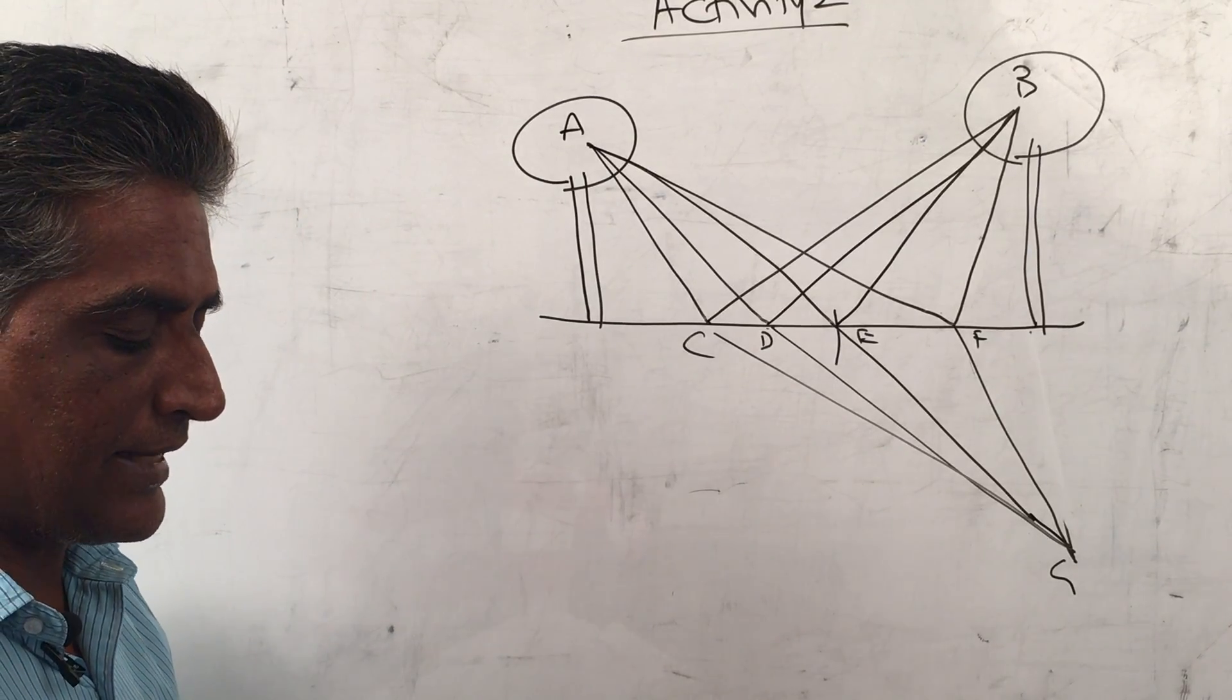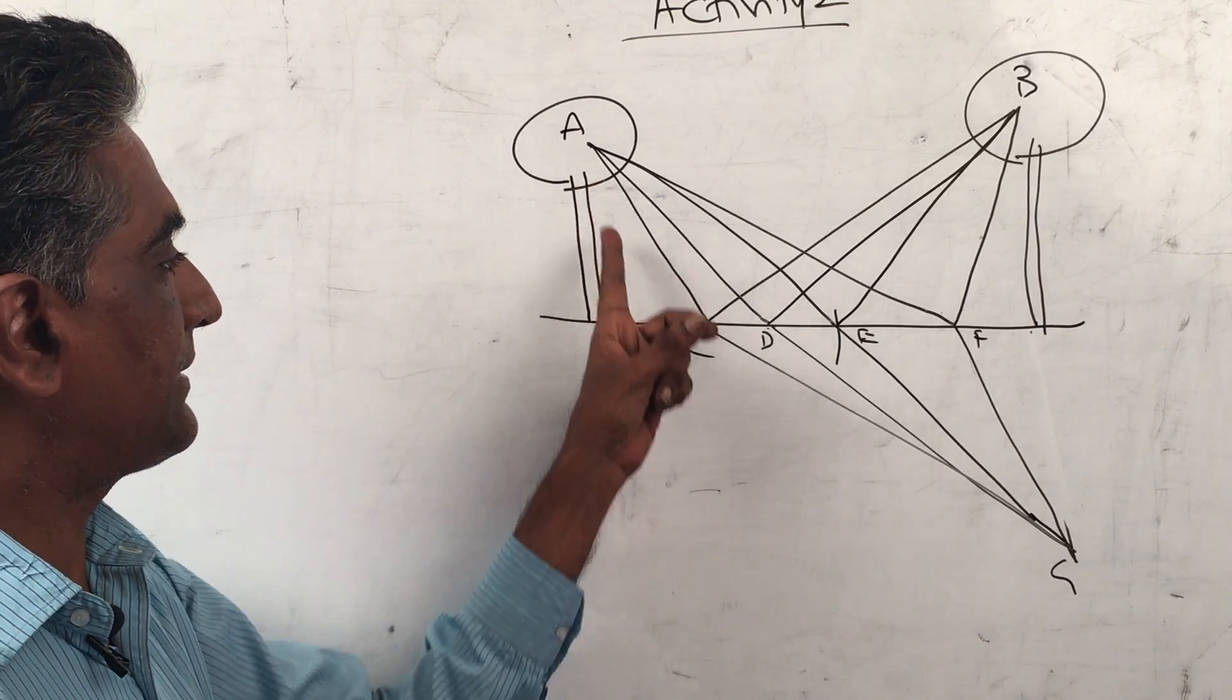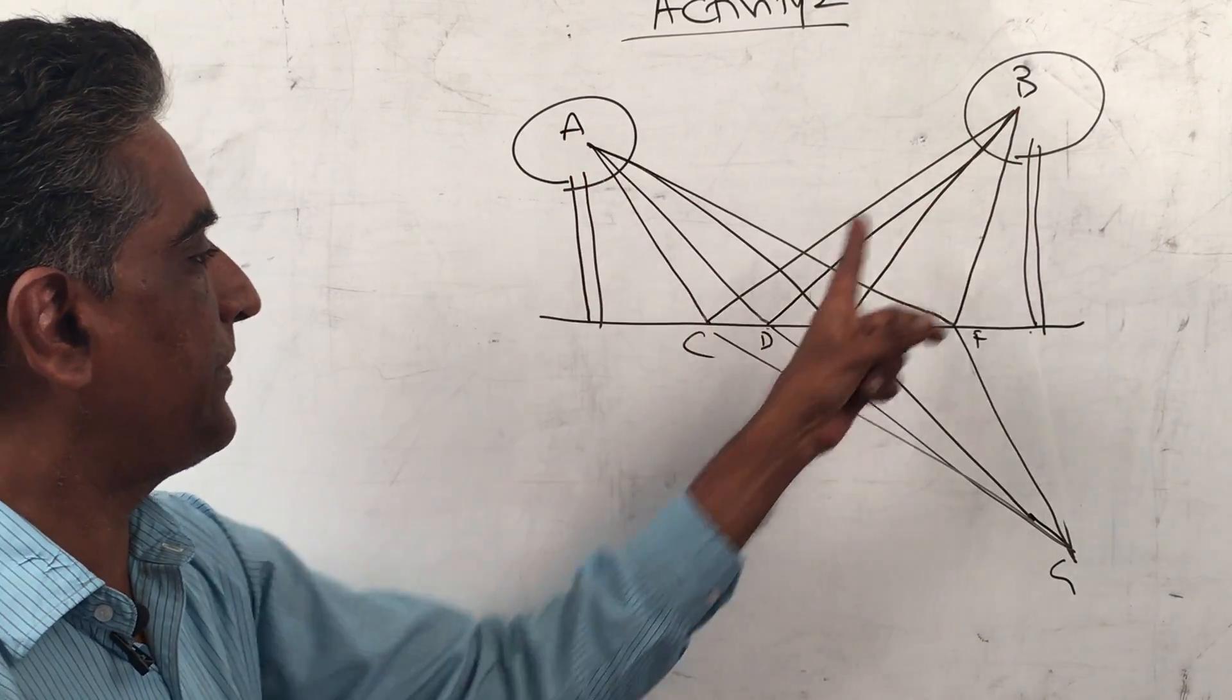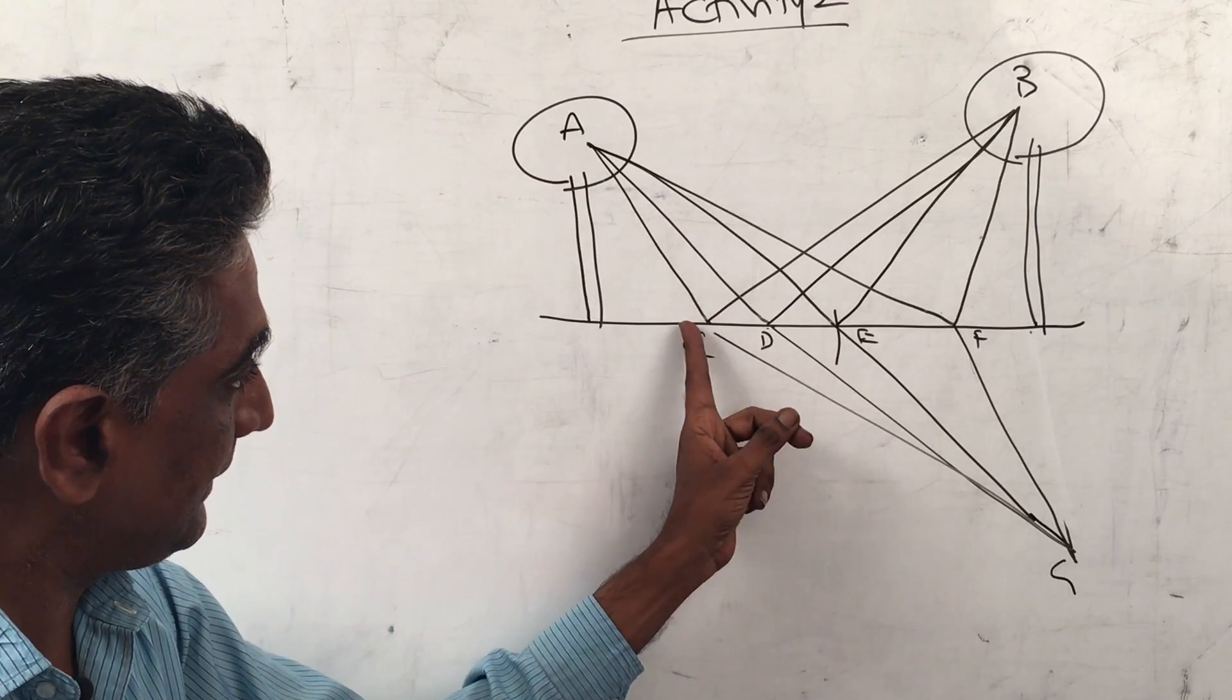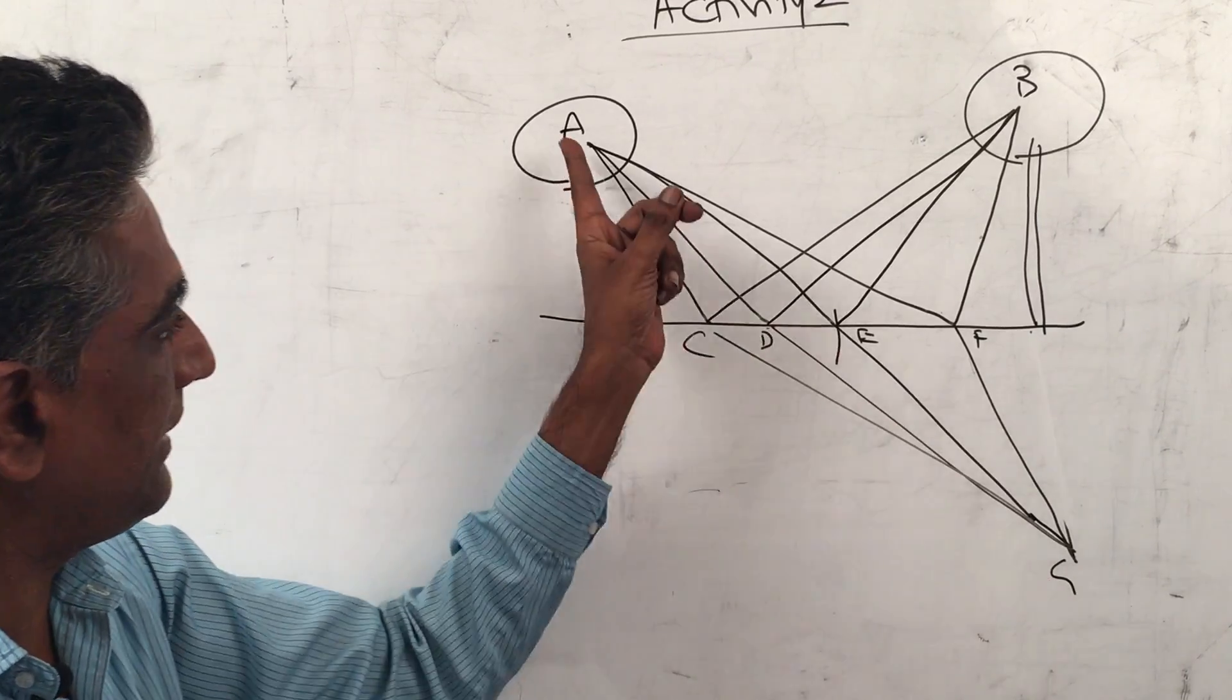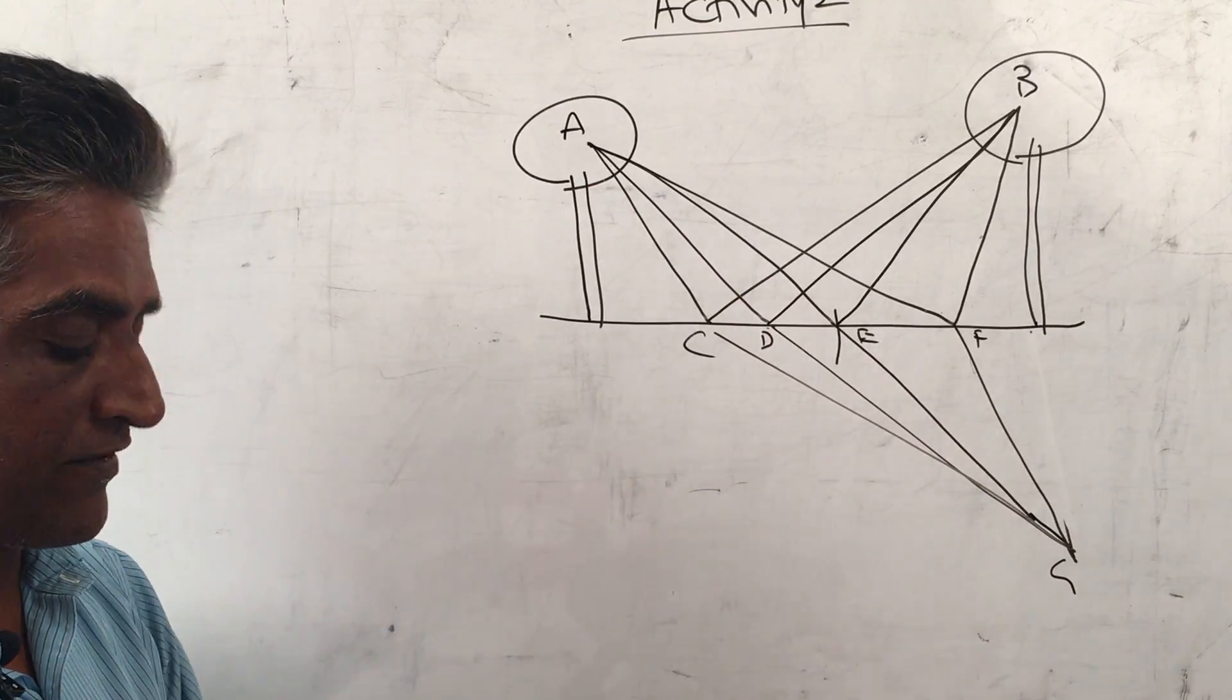The length of the path ACB is equal to AC plus CB, but CB is equal to CG, so it is AC plus CG. Similarly, AD plus DG, AE plus EG, AF plus FG.